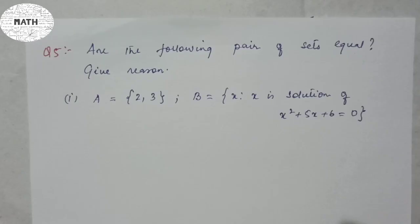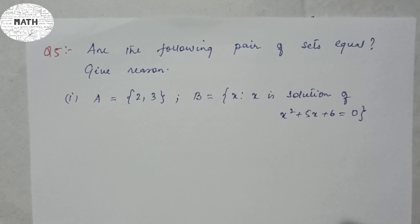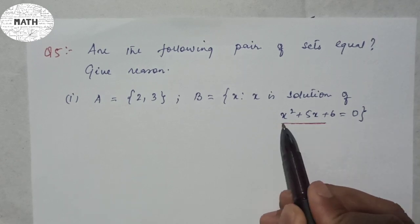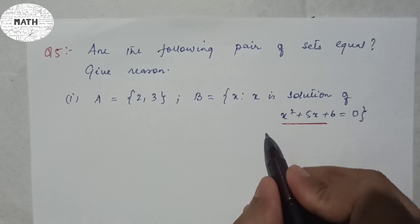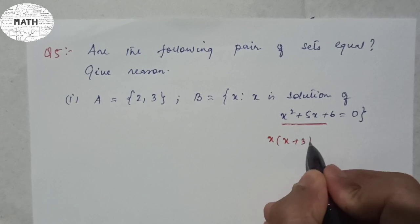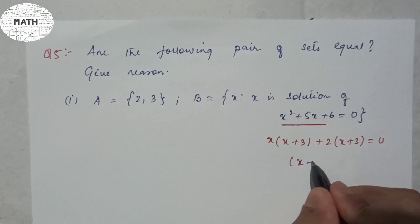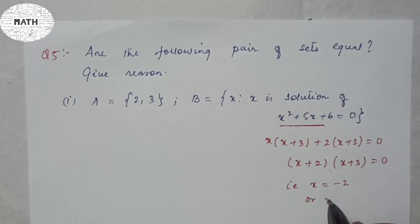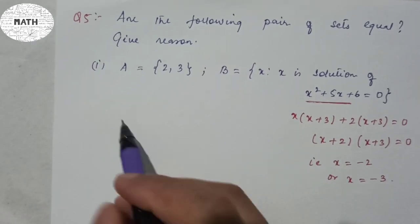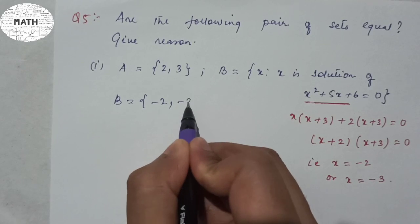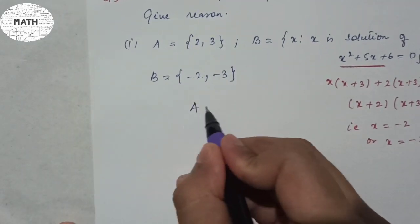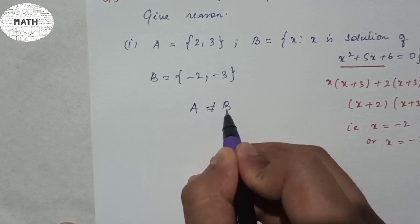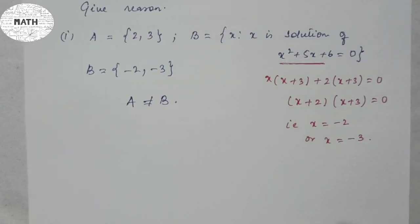Question five of exercise 1.2: A = {2, 3} and B = {x : x is a solution of x² + 5x + 6 = 0}. Solving by middle-term splitting: x² + 5x + 6 = (x + 2)(x + 3) = 0, giving x = −2 or x = −3. So B = {−2, −3}. Since the elements of A and B are not exactly the same, A ≠ B.